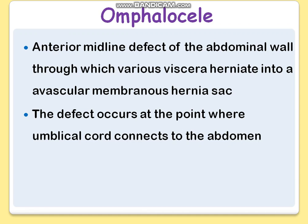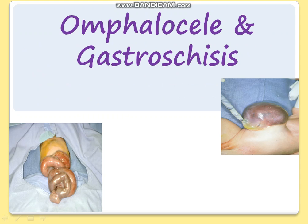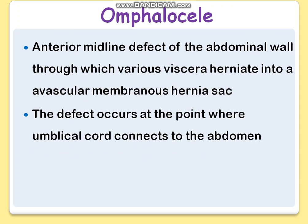The defect occurs at the point where the umbilical cord connects to the abdomen. Looking at the picture, it is very clear — if the umbilical cord joins exactly at the midline, herniation occurs at that point. Omphalocele is an anterior midline defect through which viscera herniate into an avascular membranous hernial sac, at the point where the umbilical cord connects to the abdomen.